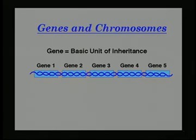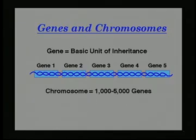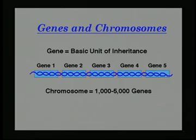Genes are strung together on chromosomes that each consist of 1,000 to 5,000 genes. The question then is, now that we have the sequence of all of the genes and their order on all of the chromosomes, what is it that these genes do? What is one of these unitary functions, and what happens when its function goes awry, as in the case of disease?